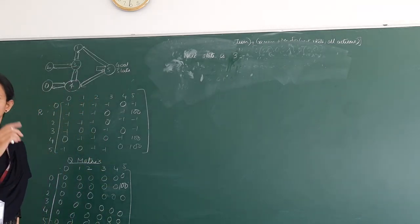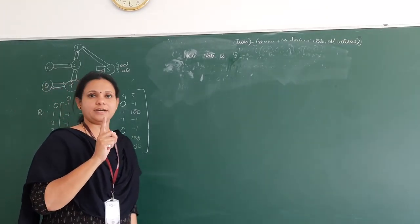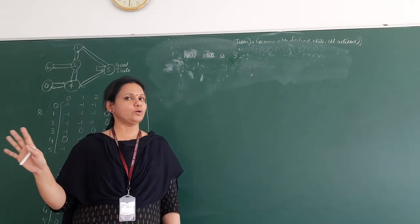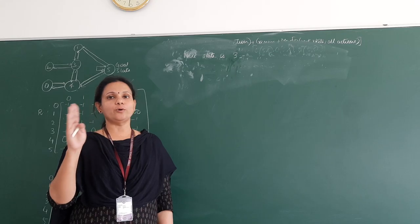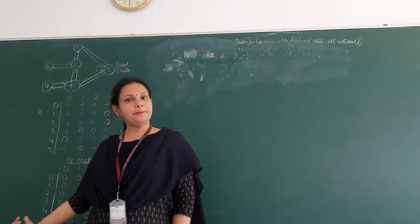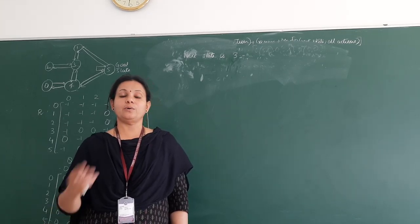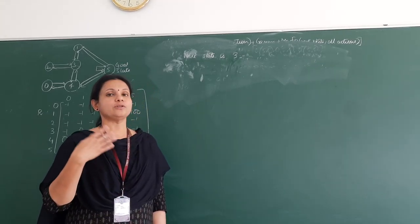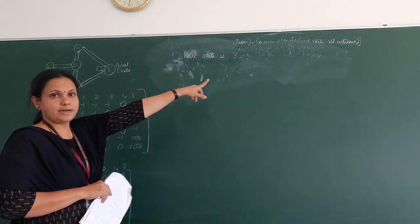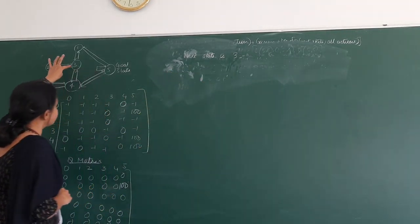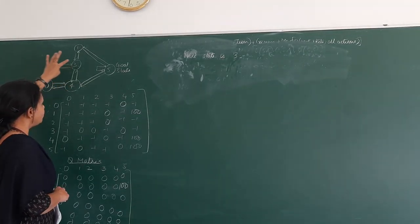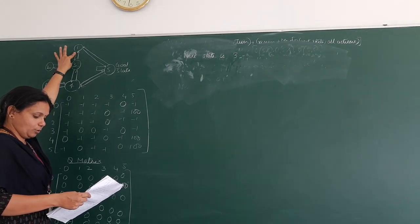Let me repeat once again. I initially considered the first state as state 1. From 1 I could go to 3 or to 5. If I go to 5, I have reached the goal state and I update my Q matrix. If I am going to 3, then 3 becomes my next state and that cycle is not complete yet. From 3, where can I go? I can go to 4, I can go to 2, or I can go to 1 — all 3 cases.